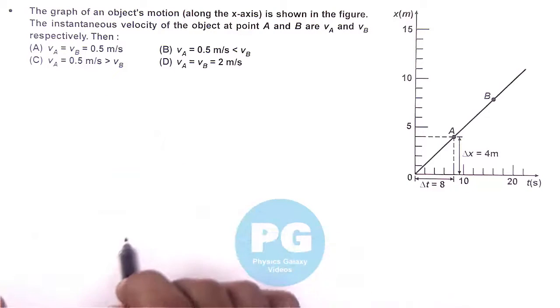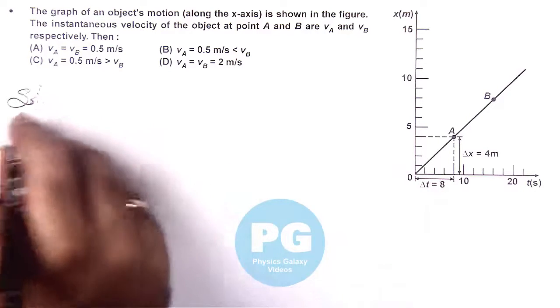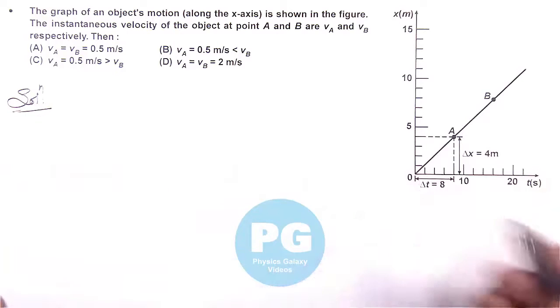Then we need to check the values of V-A and V-B. Here one thing we can see, as the graph is a straight line, then here V-A and V-B must be equal.